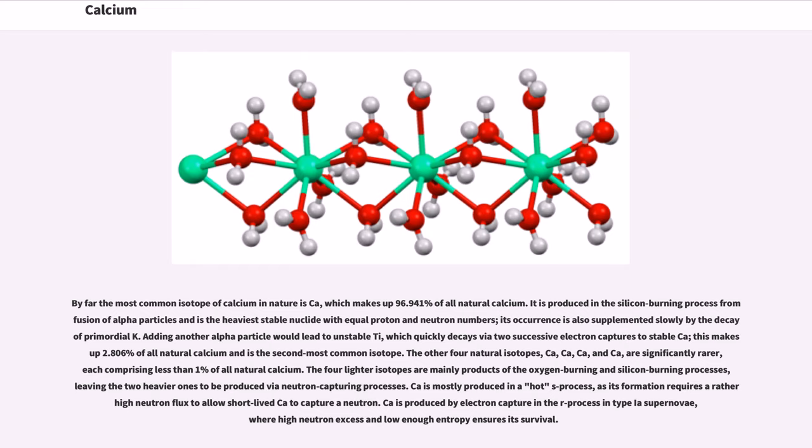This makes up 2.806% of all natural calcium and is the second most common isotope. The other four natural isotopes, ⁴²Ca, ⁴³Ca, ⁴⁶Ca, and ⁴⁸Ca, are significantly rarer, each comprising less than 1% of all natural calcium. The four lighter isotopes are mainly products of the oxygen burning and silicon burning processes, leaving the two heavier ones to be produced via neutron capturing processes.